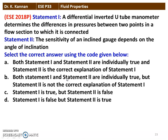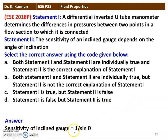The next question is from the 2018 question paper with two statements. Statement 1: A differential U-tube manometer determines the difference in pressure between two points in a flow section. Statement 2: The sensitivity of an inclined gauge depends on the angle of inclination — sensitivity = 1/sin θ; as θ increases, sensitivity decreases. Both statements are individually true, but Statement 2 is not the correct explanation for Statement 1, as they refer to different instruments.